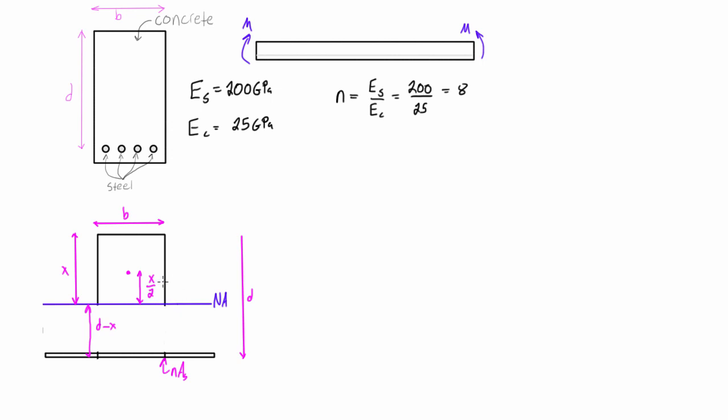Everything above the neutral axis is in compression, as in any problem with a positive bending moment. And everything below the neutral axis is in tension. We're ignoring the fact that there's a little bit of super weak concrete there because concrete's not good in tension.